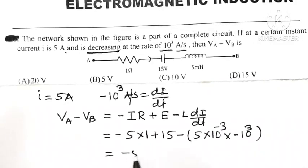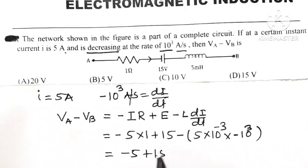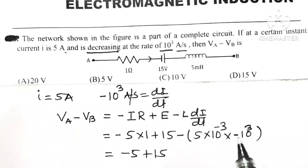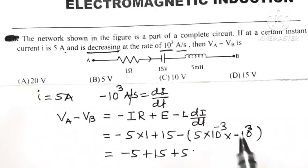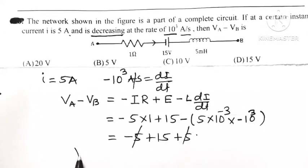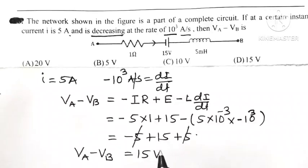So it is -5 plus 15. And see here, minus into minus is plus. So it is 5 × 10⁻³ × 10³, which is 1. So -5 plus 5 get cancelled. Or potential difference between point A and that of B is equal to 15 volt.